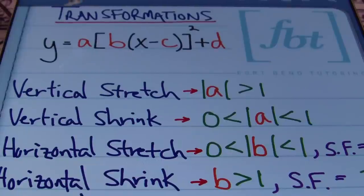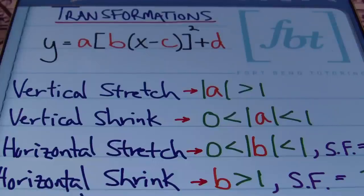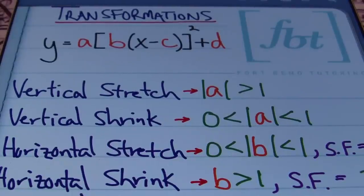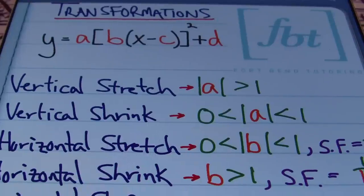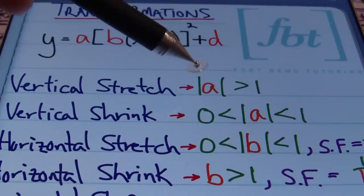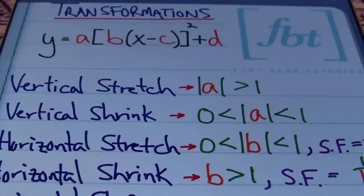What we have before you is an example of a quadratic function. I've broken it down into a format where you can see four values — A, B, C, and D — that are going to help us define the transformations. If this quadratic function had a vertical stretch, the absolute value of A would be greater than 1. If it had a vertical shrink, the absolute value of A would be between 0 and 1 — a proper fraction or decimal between 0 and 1.